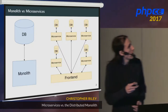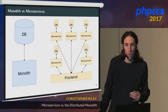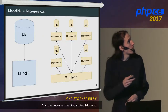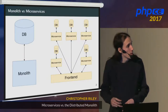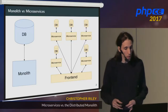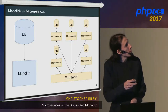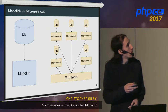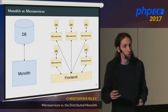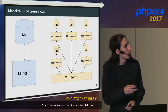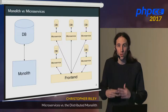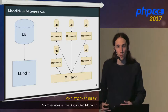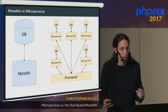On the left here, we've got what you might refer to as a monolith — a big single code base, probably a single data store. On the right, as a contrast, something that looks more like a microservice architecture, where you might have multiple different code bases, multiple different data stores, and probably some sort of front-end application which ties everything together. So your users are still presented with a single unified system.